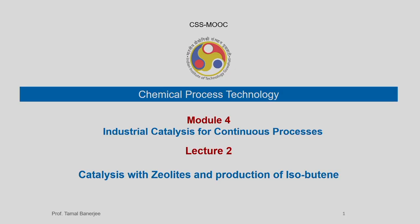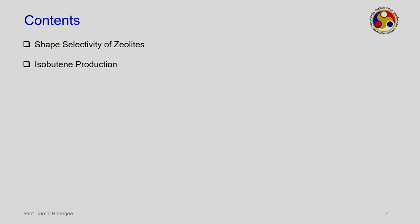Now let us move to a special type of catalyst which are prevalent in the industrial scenario — these are called zeolites. Starting with this lecture 2, the topic is catalysis with zeolites and production of isobutene. What are zeolites? We will first introduce zeolites, then we will go into shape selectivity.